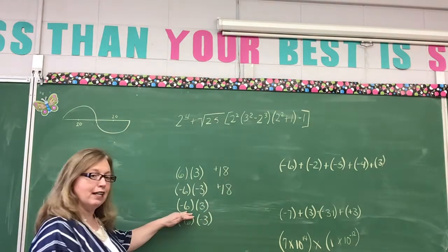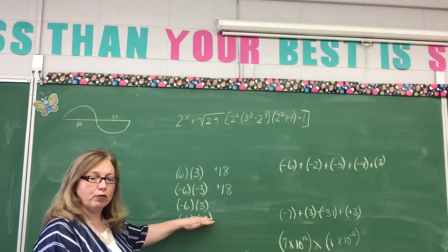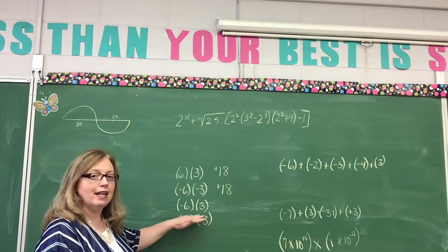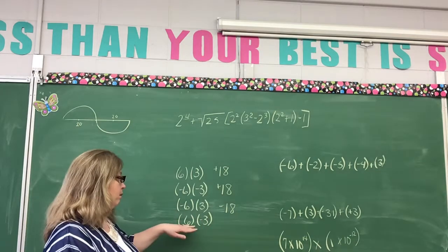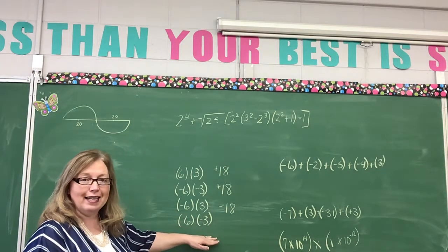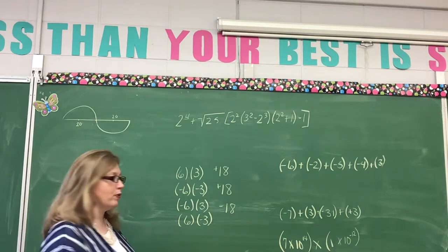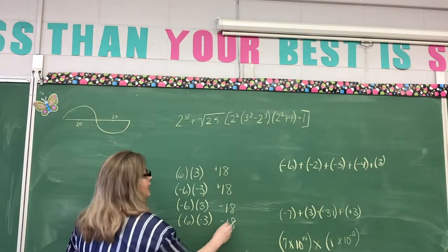Okay, negative six and positive three. The answer is negative 18. Why? Because my signs are different. Okay, here I have a positive six times a negative three, so my answer is negative 18.